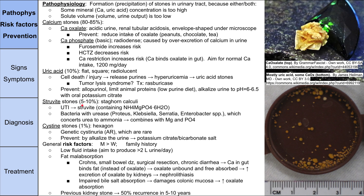Next are struvite stones — about 5 to 10 percent of stones. These form those massive staghorn calculi, where a large stone in the renal pelvis takes up all the branches of the pelvis. They're precipitated by UTIs. Bacteria with urease — such as Proteus, Klebsiella, Serratia, and Enterobacter — convert urea to ammonia. The ammonia in the urine combines with magnesium and phosphate to make struvite: ammonium, magnesium, and phosphate combined with water.